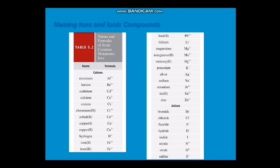In this table, this table shows the names and formulas of some common monoatomic ions. We have for the cations: aluminum, barium, cadmium, calcium, chromium, cobalt, copper, copper-2, hydrogen, iron-2, iron-3, lead-2, lithium, magnesium, manganese, mercury, potassium, silver, sodium, and strontium.